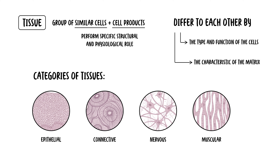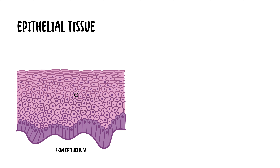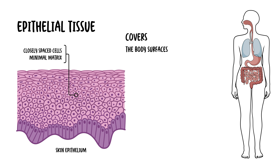Let's take a look at the features of the four primary types of tissues, beginning with epithelial tissue. Epithelial tissue is composed of layers of closely spaced cells — epithelial tissues are composed of cells that are packed tightly together. You can think of them as bricks on a wall. They contain minimal matrix. Epithelial tissues cover the body's surfaces, so they actually make up your skin. They cover the external and internal lining of organs.